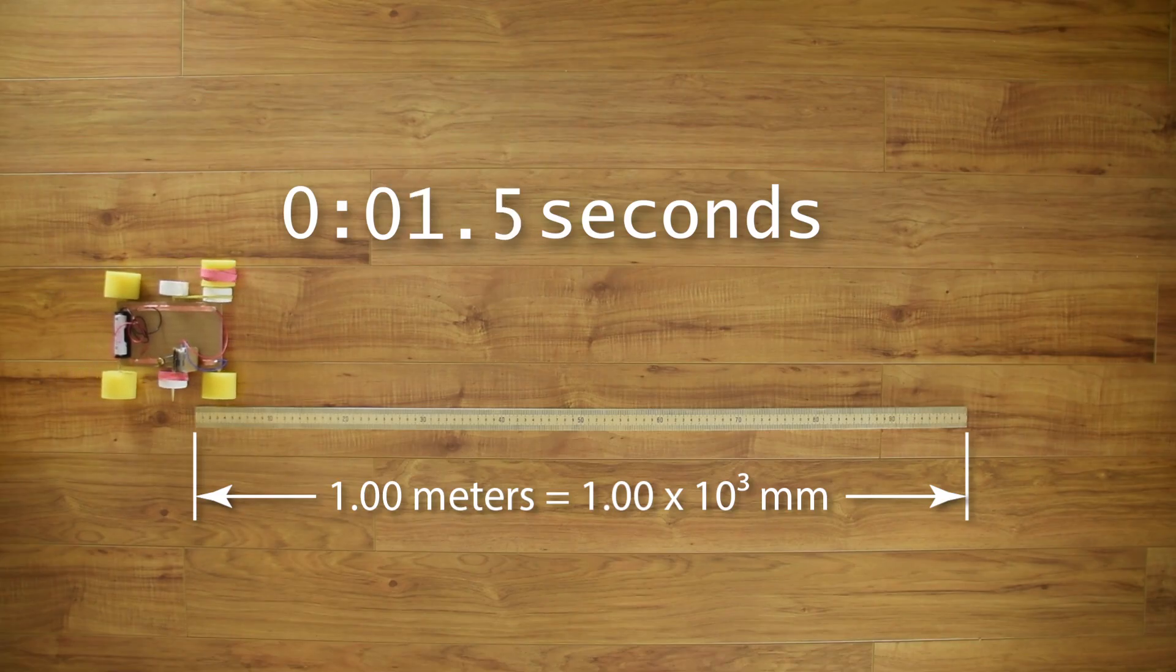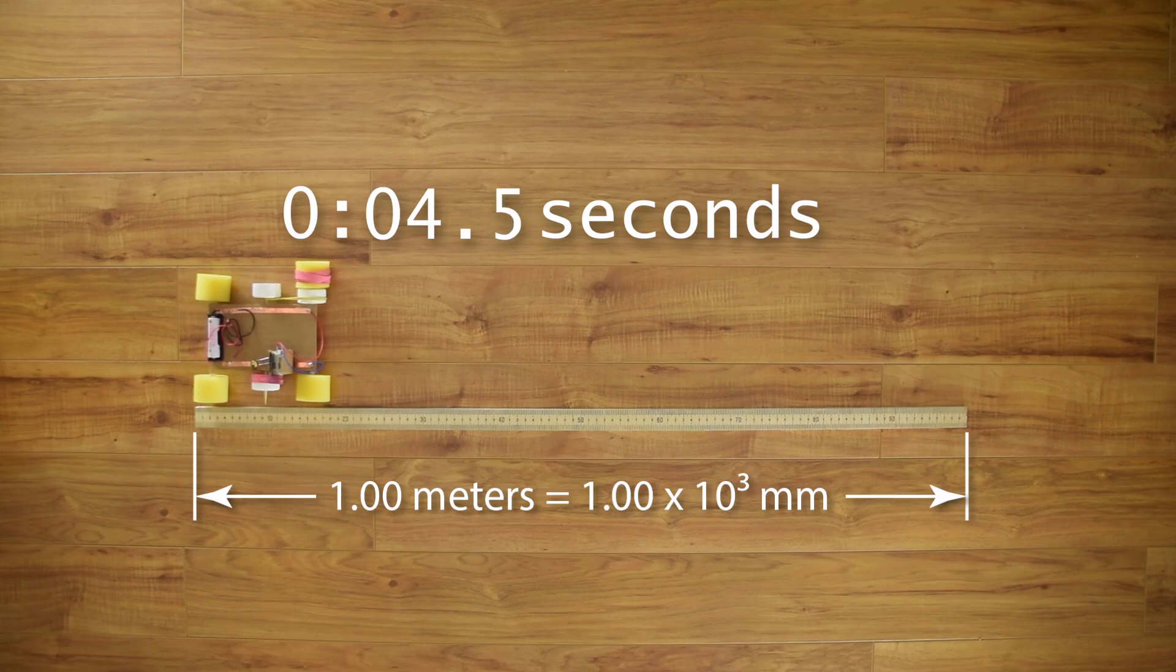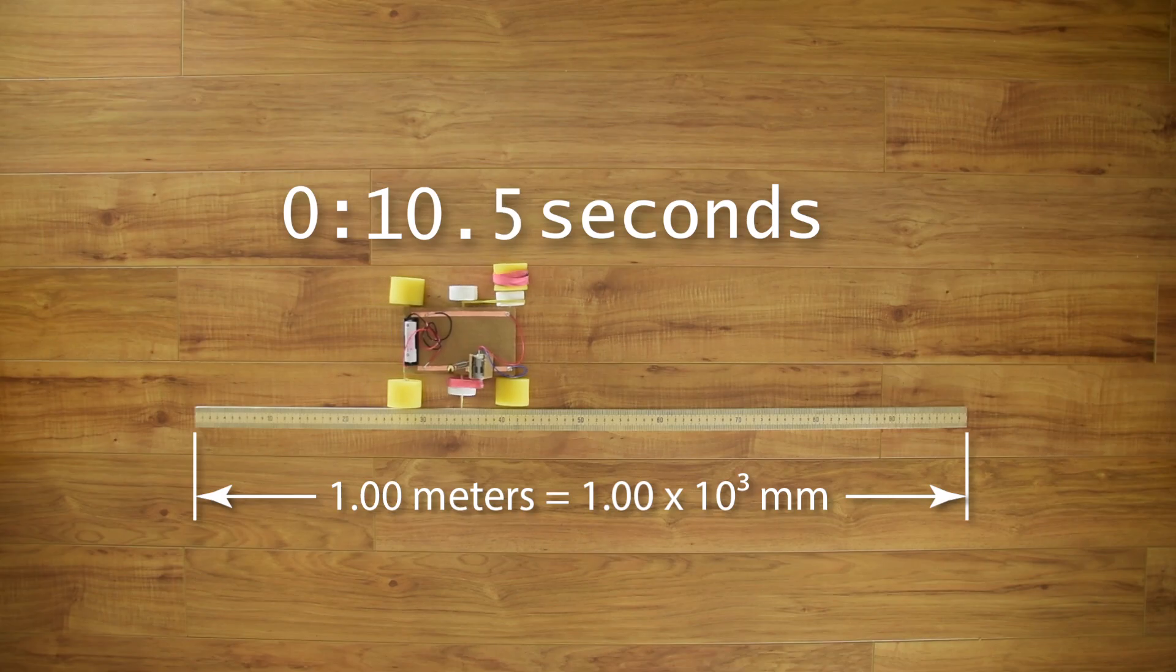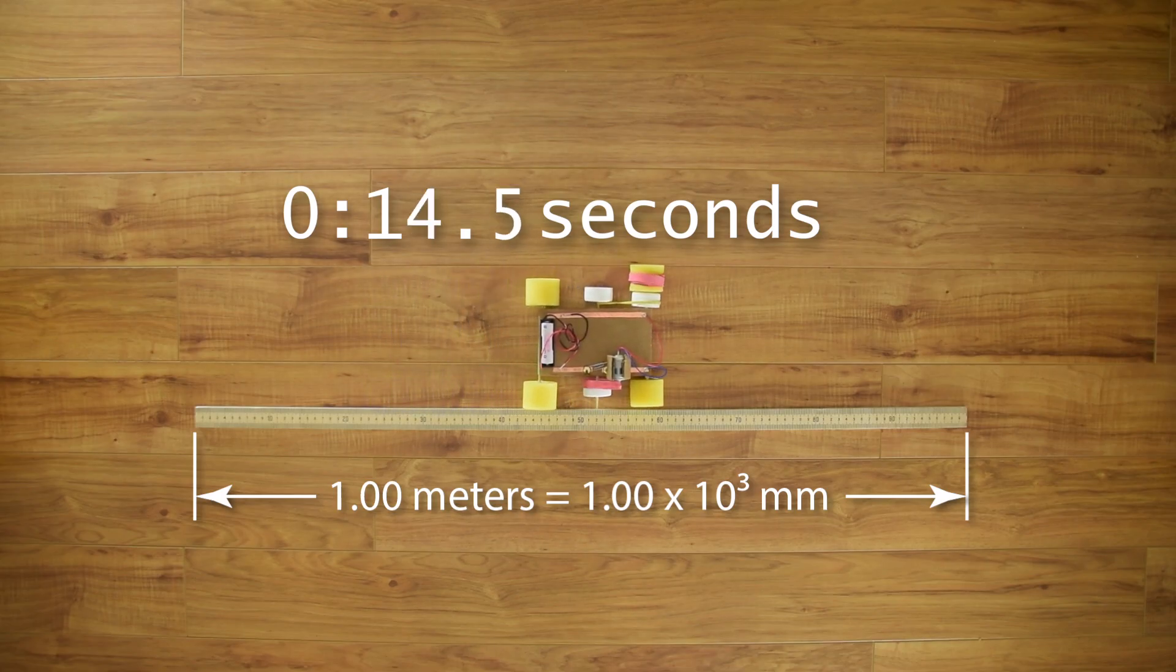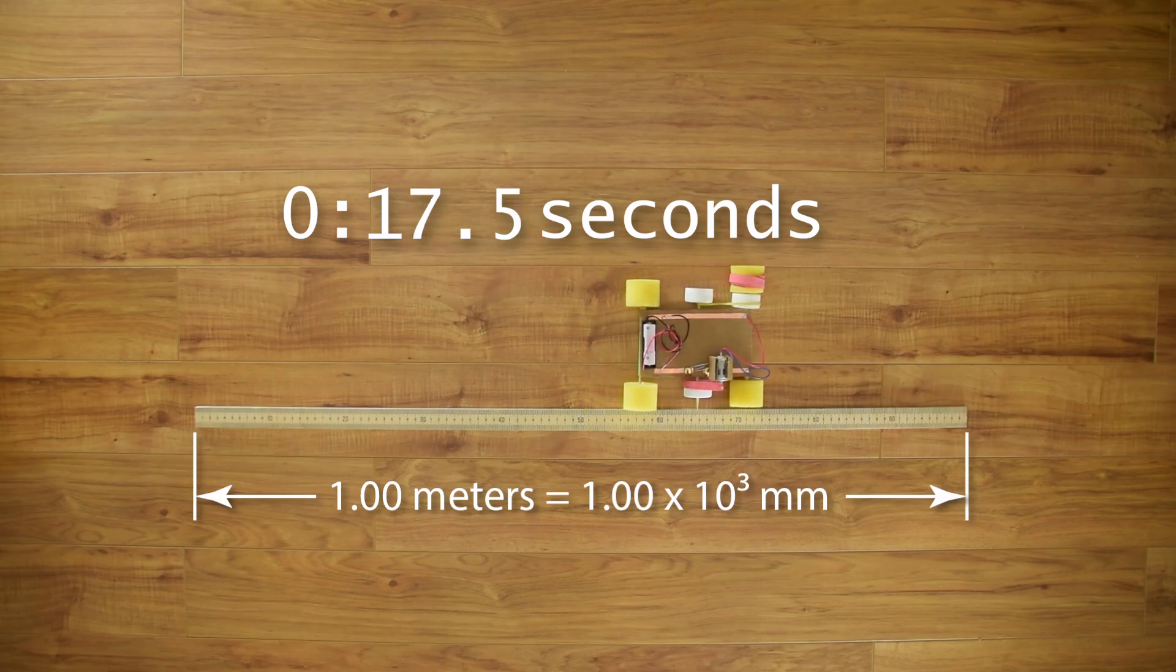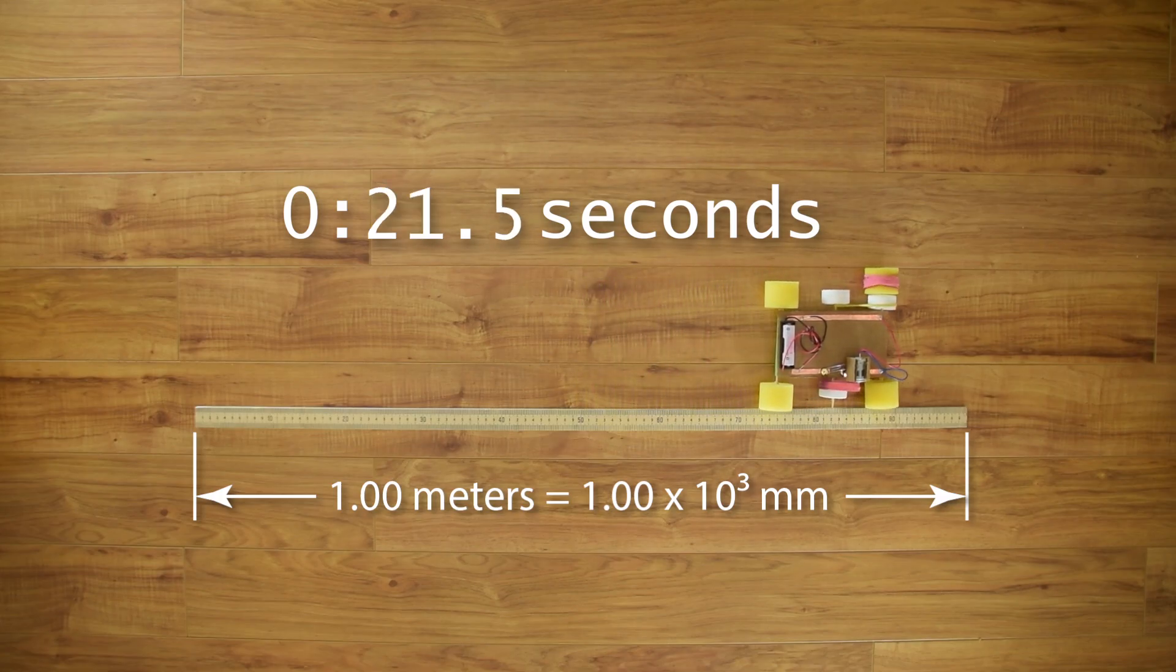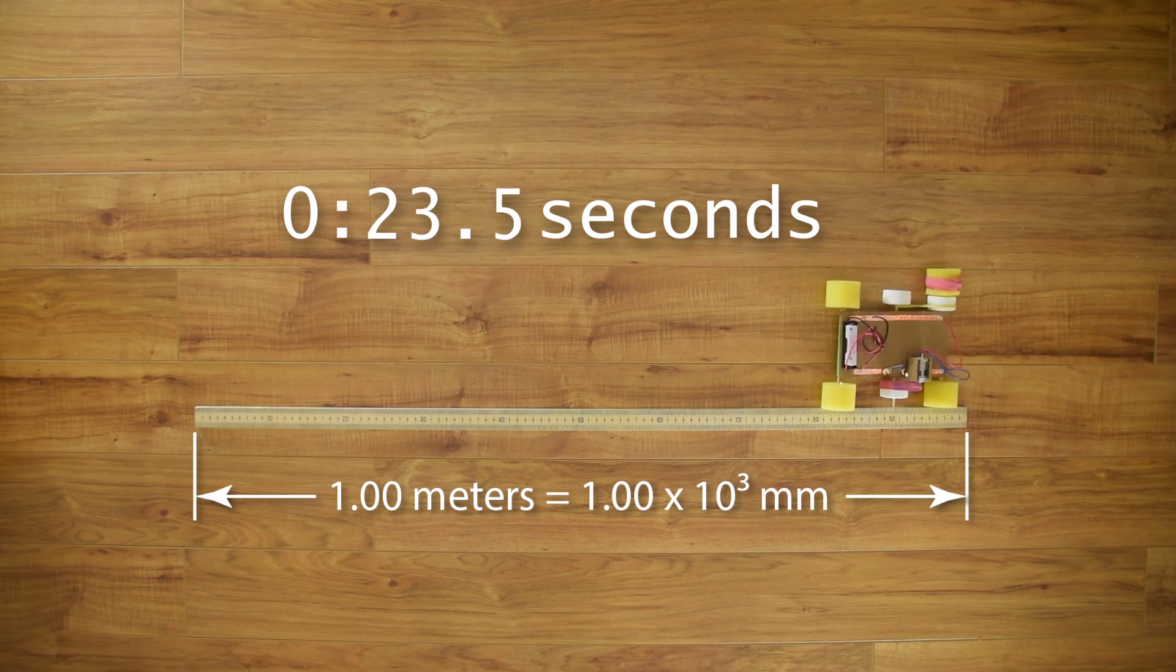Now, we need to know how fast Slow Velocity Racer moves. So, I had her race right next to a meter stick. Remind me, Billy, how long is a meter stick? One meter? Yep. Somehow, people sometimes forget that a meter stick is one meter long, which is also 1,000 millimeters. And you can see that Slow Velocity Racer takes 23.8 seconds to travel 1,000 millimeters.